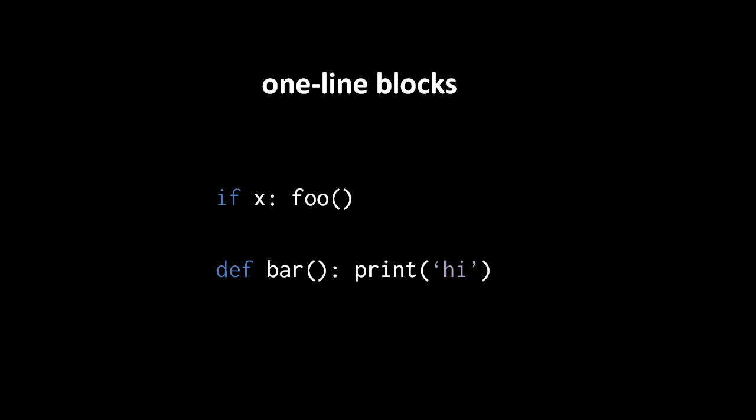For yet another stylistic allowance, if you have a code block consisting of just one statement, you can write that statement on the same line as the block header. So here for example you see an if and a function definition, both of which have just one statement in their bodies, so they're just all written on one line.